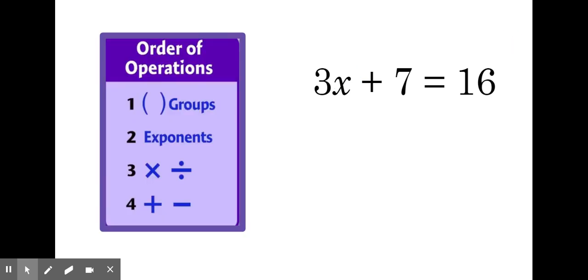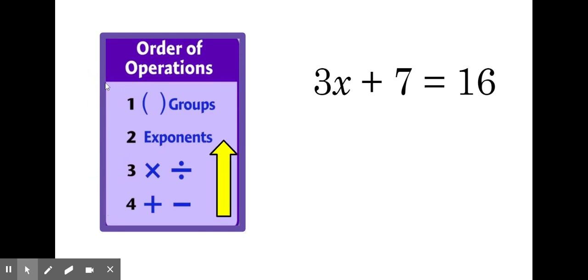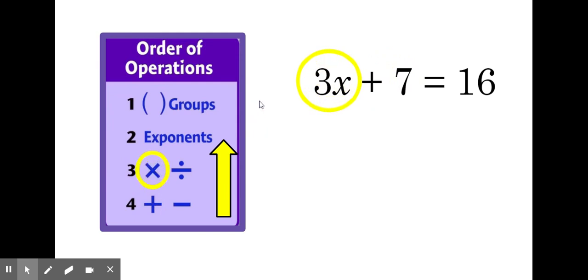To undo any operation, we use the inverse or the opposite. What gets a little tricky is when there's more than one operation — you have to know what order to undo those operations in. Order of operations tells us what order to do operations. So if we reverse the order, we can undo operations. When we are simplifying an expression, we follow these steps in order, so when we want to undo operations, we can just go backward in the reverse order.